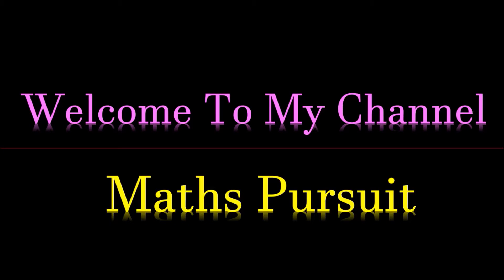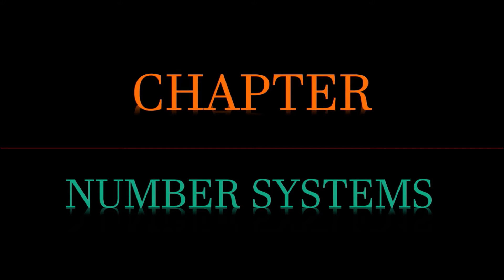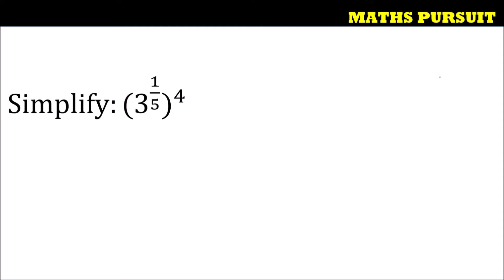Welcome to my channel Maths Pursuit. Today we will look into questions from the chapter called Number Systems. The given question is: simplify 3 to the power 1 upon 5, to the power 4.